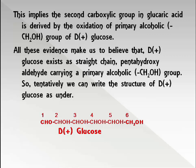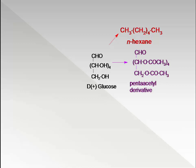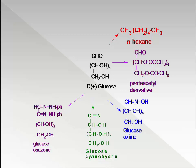To summarize the open chain structure evidence: reduction with red phosphorus and hydroiodic acid gives n-hexane; reaction with 5 molecules of acetic anhydride gives the pentaacetyl derivative; reaction with hydroxylamine gives glucose oxime; reaction with cyanohydric acid gives glucose cyanohydrin; reaction with phenylhydrazine gives glucose osazone; oxidation with mild oxidizing agents like bromine water gives gluconic acid; and oxidation with strong oxidizing agents like dilute nitric acid gives the dicarboxylic acid glucaric acid.